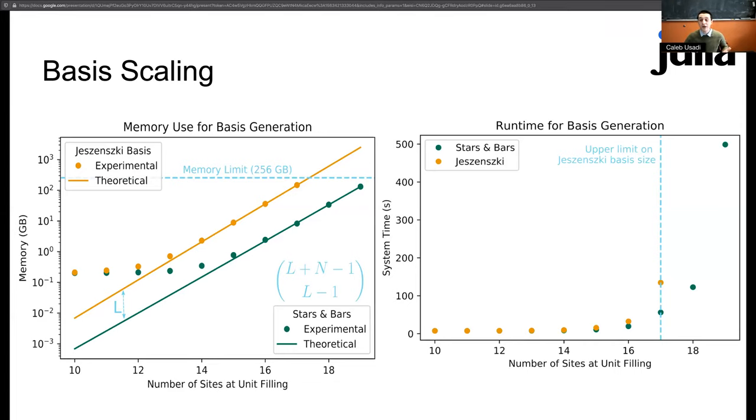Additionally, there was a small speed up when using the stars and bars representation over the traditional Yadzinski basis, but that is kind of a side effect of computational efficiency.